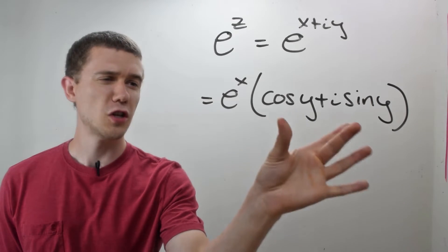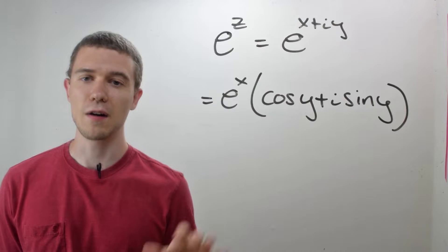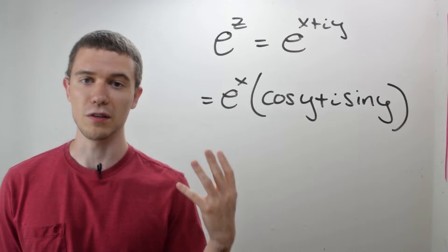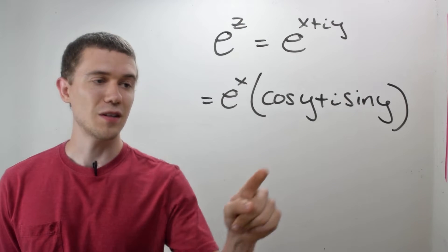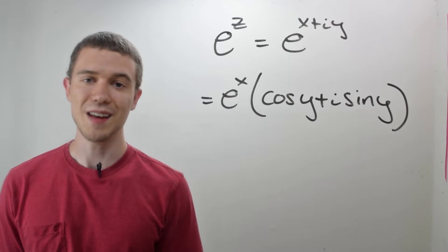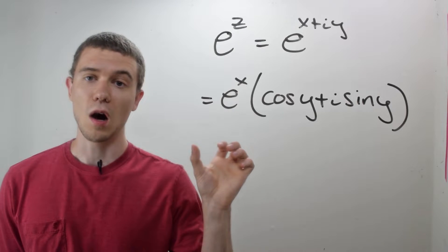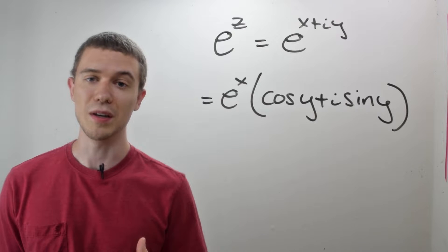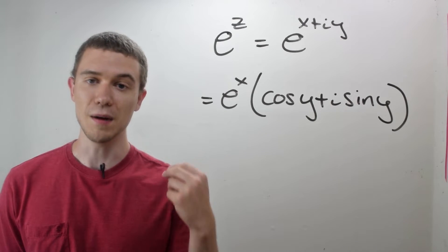And if you're wondering about just where this is coming from, I have a video right here. You can check out a little bit of the background in case you've had some experience with calculus. So what's really interesting is that you'll notice that this piece right here, the cosine y plus i sine y, that's exactly the part of the polar form of the complex number that you're used to dealing with. And this leads us into the exponential form of a complex number.